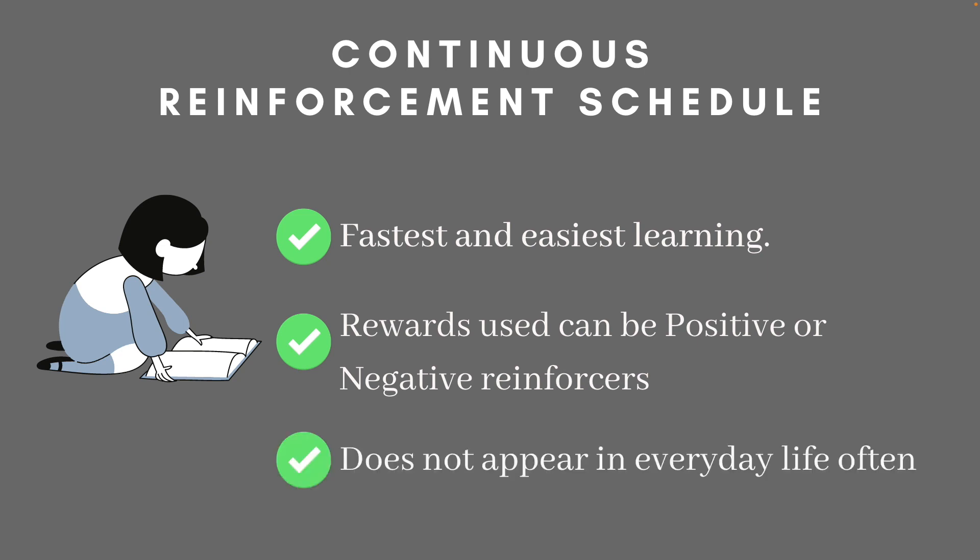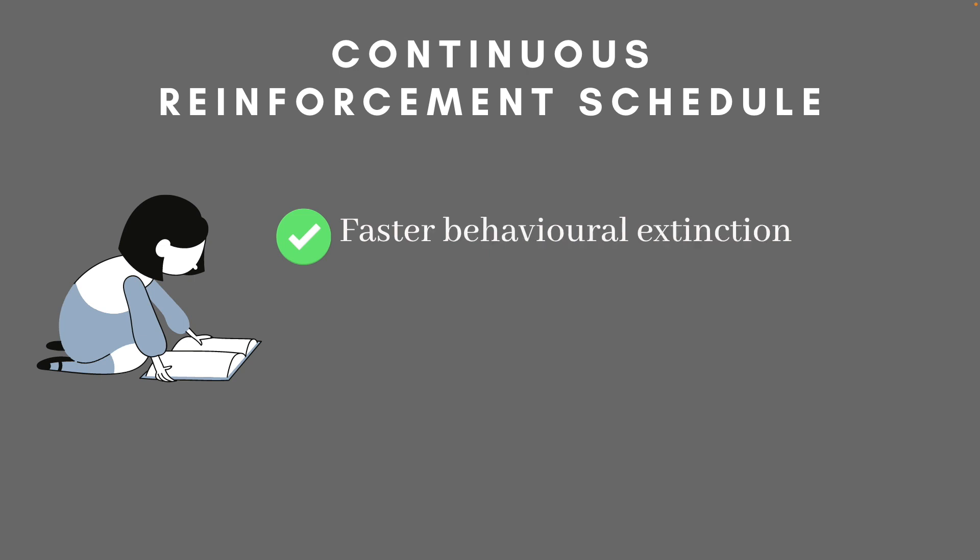In our everyday lives, however, this form of reinforcement might not appear as often as we might think. Imagine receiving a reward every single day when you show up at work — that seldom happens. Research has shown that continuous reinforcement results in subjects responding much slower to rewards as the schedule progresses. This form of reinforcement schedule also has a very high rate of extinction — when you stop reinforcing a behavior, it disappears at a very fast rate.